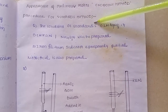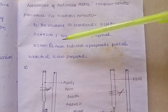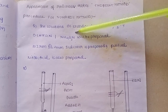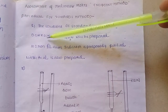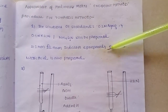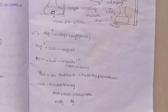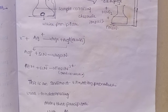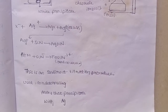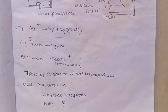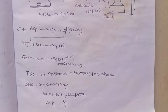For the procedure of Volhard's method: a standard solution of 0.1N AgNO3 (silver nitrate) and 0.1N potassium thiocyanate (KSCN) or ammonium thiocyanate (NH4SCN) is prepared. An iron(III) — ferric alum — indicator is prepared, and purified nitric acid is also prepared. This is an indirect titration procedure.